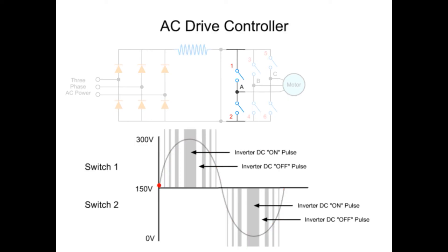The longer a switch is on, the higher the AC output voltage. Conversely, the longer a switch is off, the lower the output voltage.